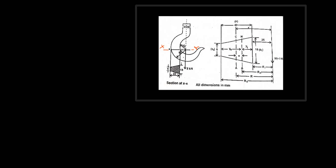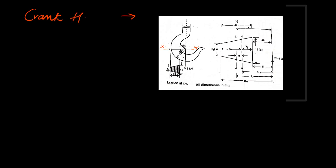In this video, I am going to explain the stresses in curved beams. The figure given in the question is a crane hook which carries a load of 5 kN. The load is applied here. W is given as 5 kN, so W is equal to 5000 N, and the diagram is also given.